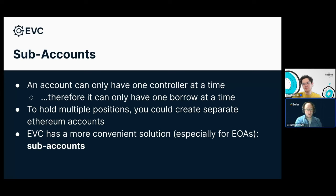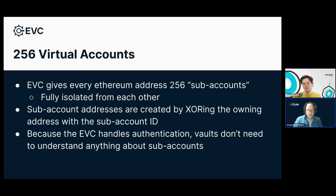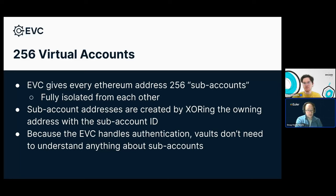The way that sub-accounts work in the EVC is by giving every Ethereum address 256 virtual accounts. From the perspective of all vaults that use the EVC, these accounts are entirely isolated from each other. Your sub-account zero is entirely isolated from sub-account one. That lets you set up positions with entirely different risk profiles in your separate sub-accounts. Under no circumstances can a borrow on sub-account one seize collateral that was only posted on sub-account zero — that's what we mean by isolation.